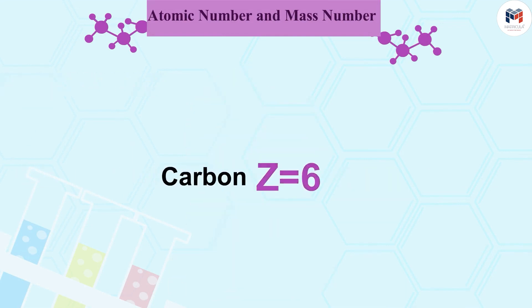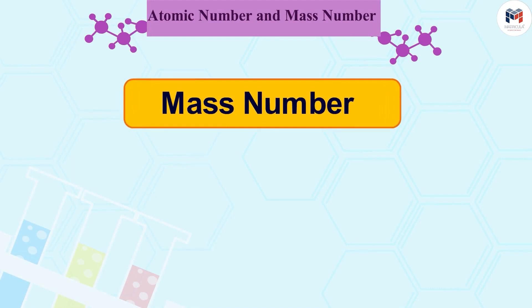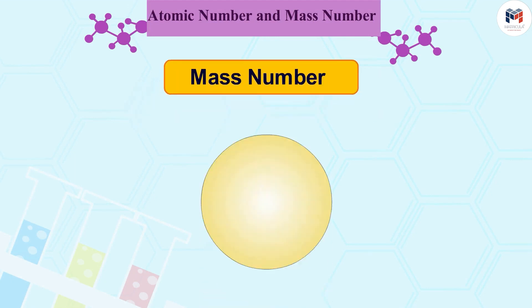Similarly, Z equals 6 for carbon. Let us go ahead and see what is a mass number. Mass of an atom is practically due to the protons and neutrons which exist in the nucleus. These are present in the nucleus of an atom.